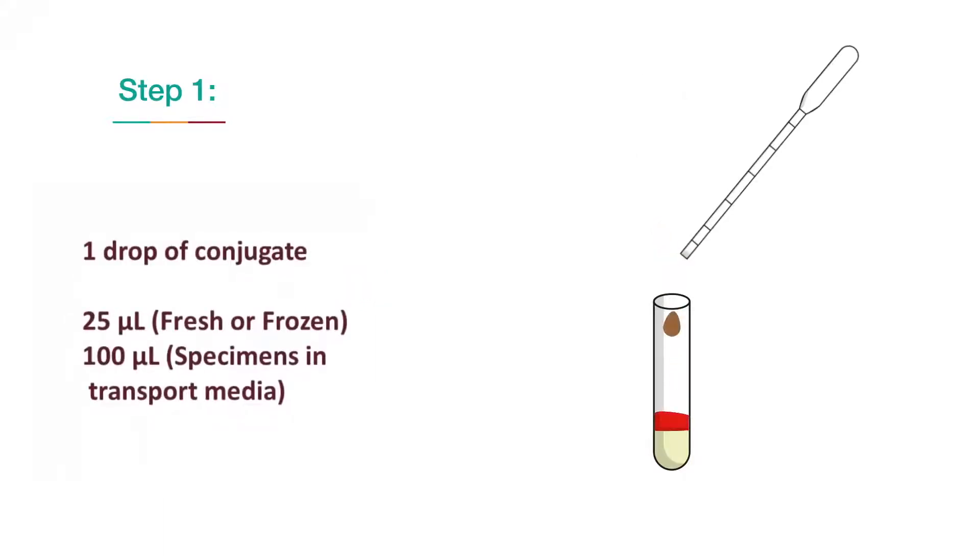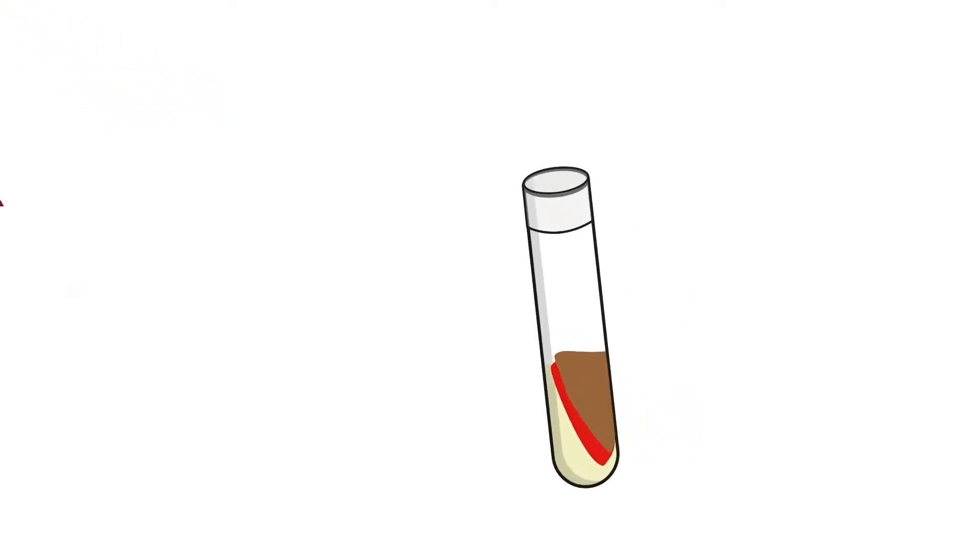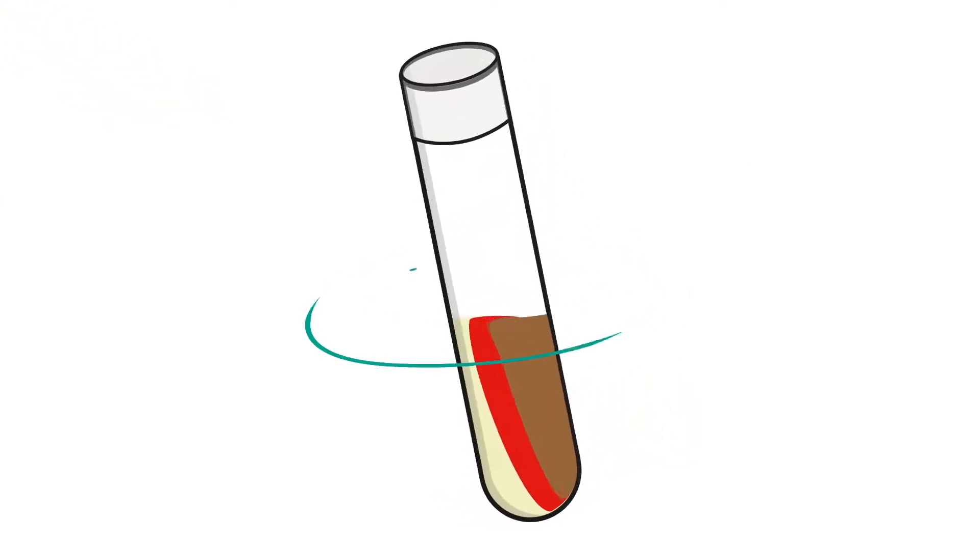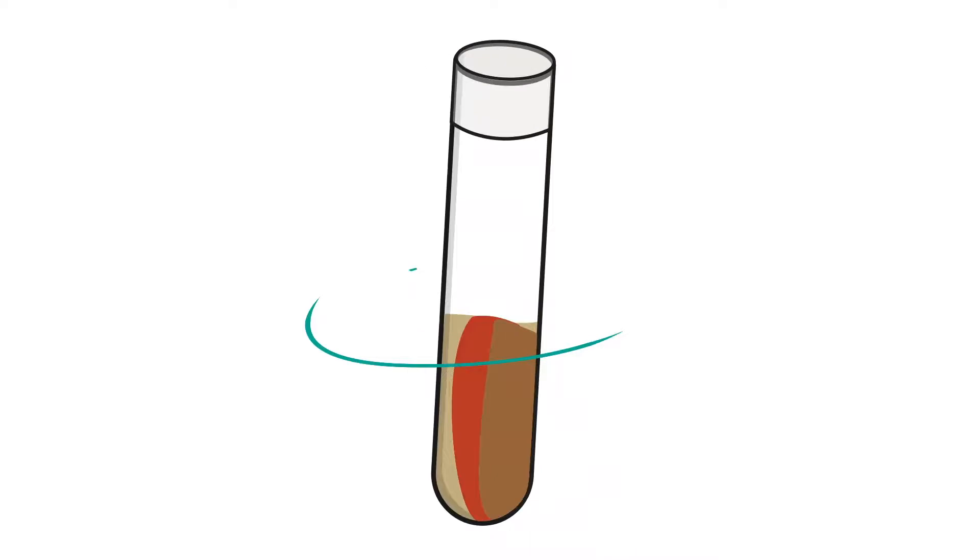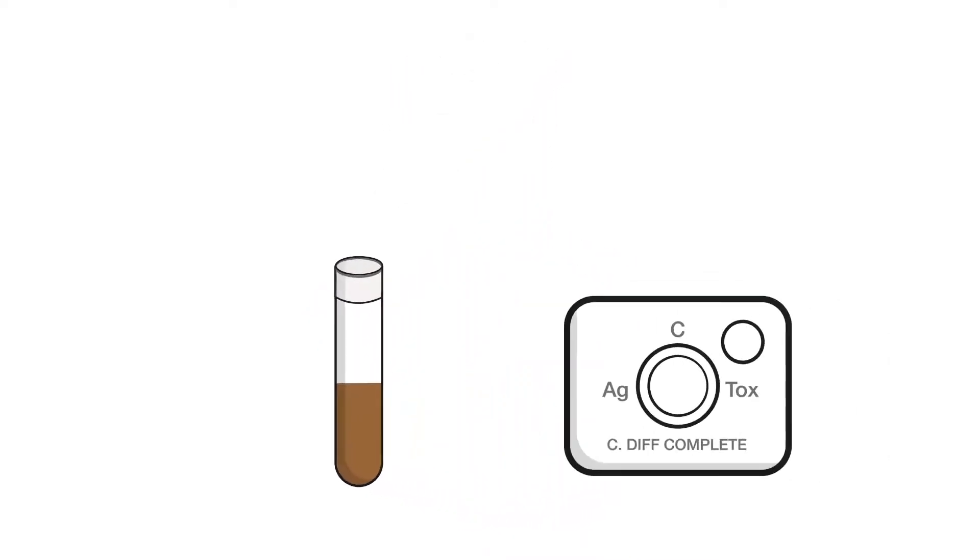Then, transfer the fecal specimen to the tube. Close the tube and mix the specimen thoroughly, either by vortexing or by repeatedly inverting the tube.